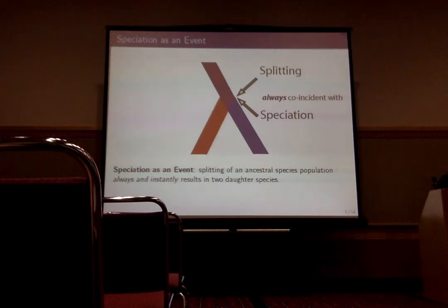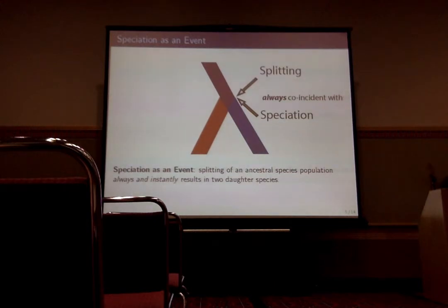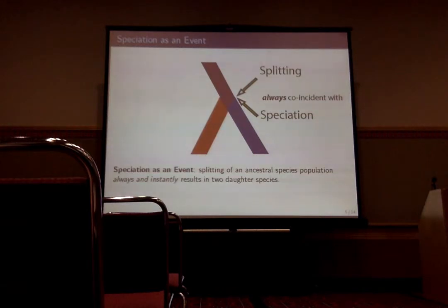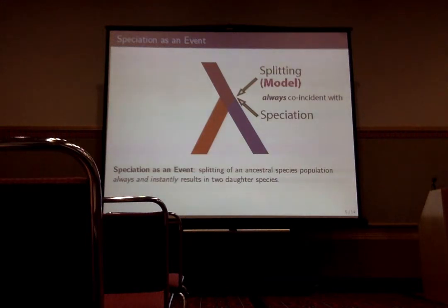Let's talk about one of the central assumptions of the multi-species coalescent — specifically, the assumption you make when you use it for species delimitation: treating splitting events as equivalent to speciation. So when that ancestral population splits, instantaneously and without any lag, they speciate into two daughter species. To be specific: the splitting is modeled by the multi-species coalescent. The speciation is your interpretation when you use it as a species delimitation model.